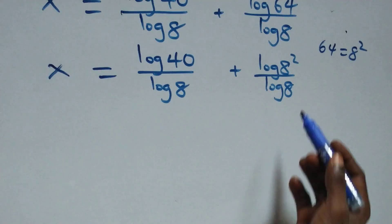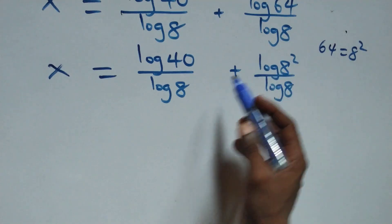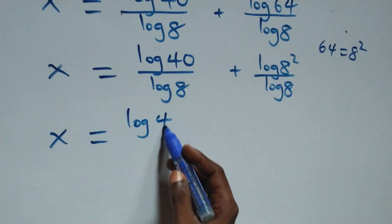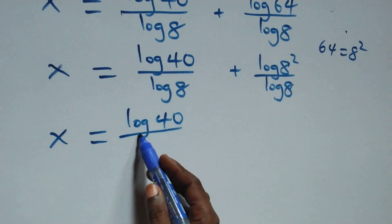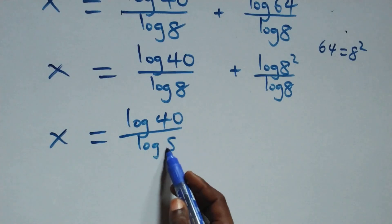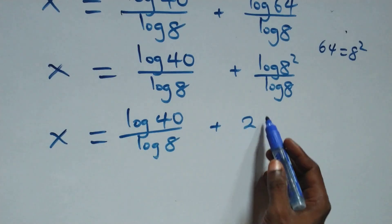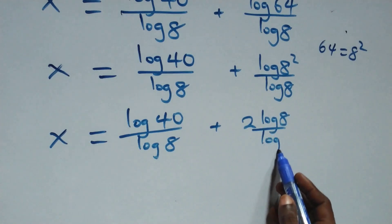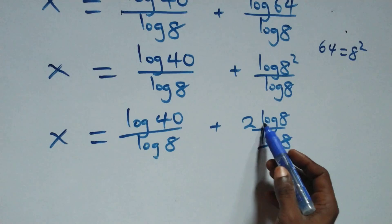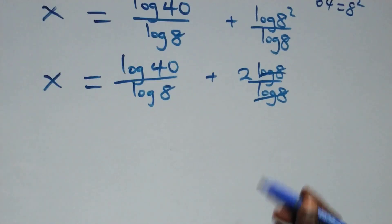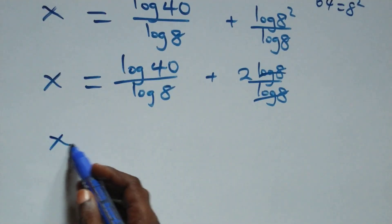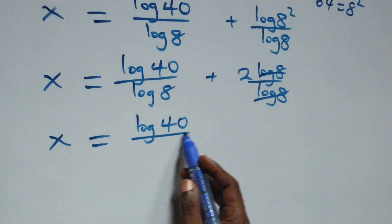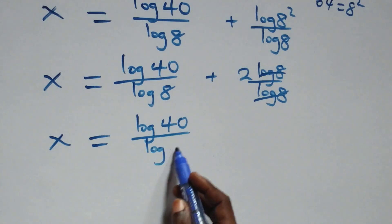We apply the power rule of logarithm: the 2 comes out front, giving x equals log 40 over log 8 plus 2 times log 8 over log 8. The log 8 terms cancel each other, and we have 2 left, so x equals log 40 over log 8 plus 2.